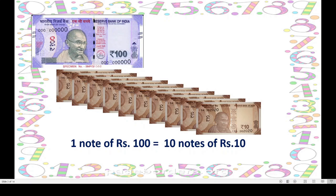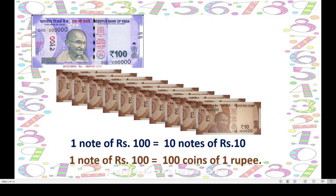So I got the change for rupees 100, that is 10 notes of rupees 10. Otherwise, for 1 note of rupees 100, if I need the 1 rupee coins, how many 1 rupee coins will I get? Yes, 100 — correct. For 1 hundred rupee note, I will get 100 coins of 1 rupee denomination.